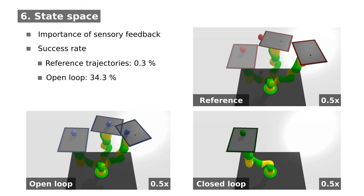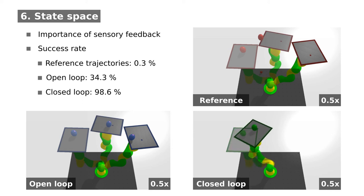If the network is trained from scratch without sensory feedback, a success rate of 62% is reached. Finally, if the network has access to the ball position during training and evaluation, more than 98% of the trajectories are successful.